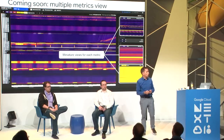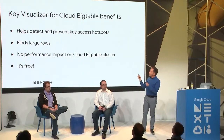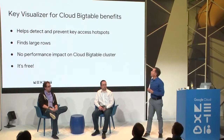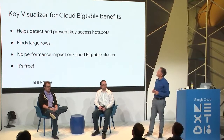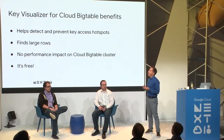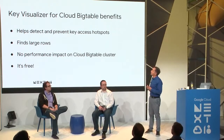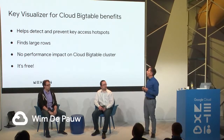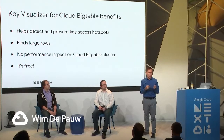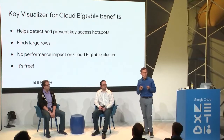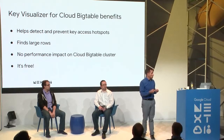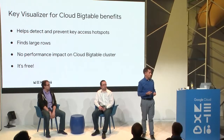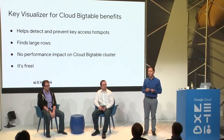That synchronized multi-metric view will be coming in a couple of weeks. To summarize Key Visualizer's benefits: it helps you detect and prevent key access hotspots, helps you find large rows over one gigabyte, has no performance impact on your cluster, and it's free. One use case not yet illustrated is optimizing your key schema, which Steve will now cover.